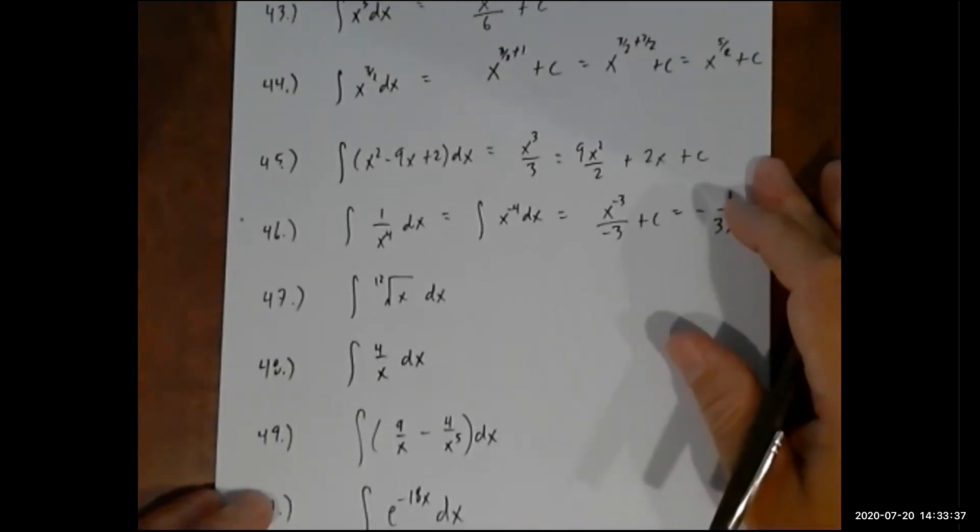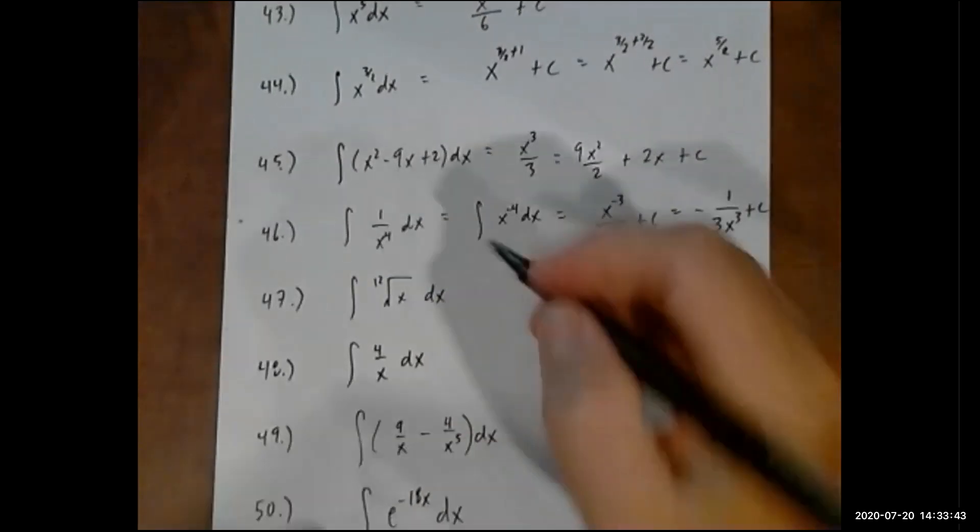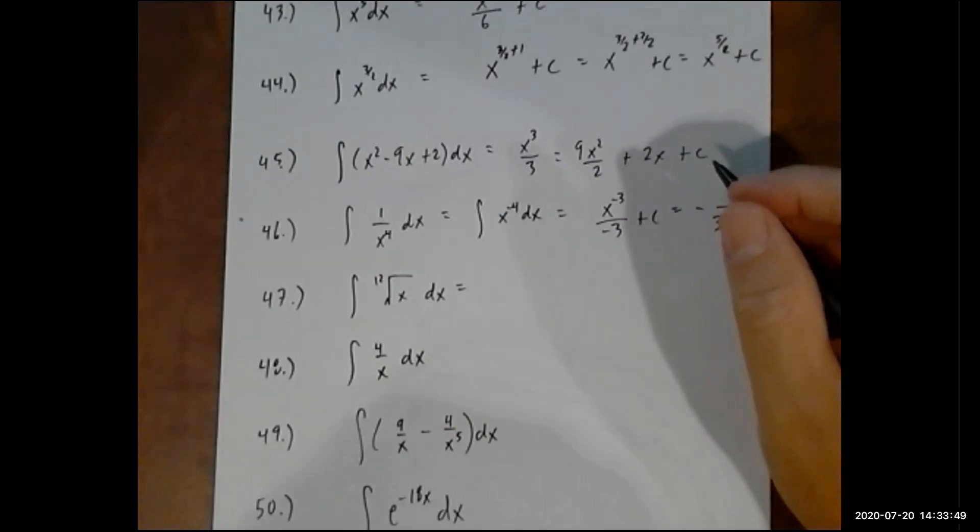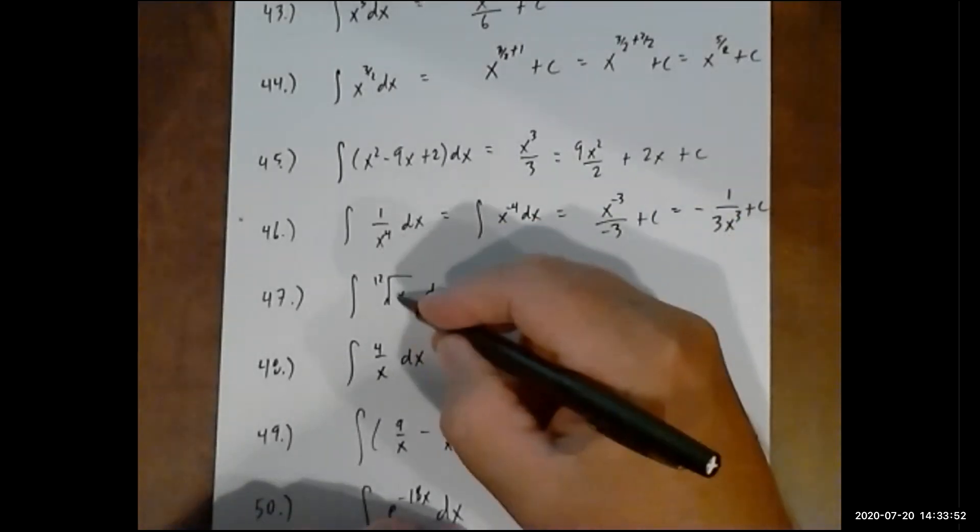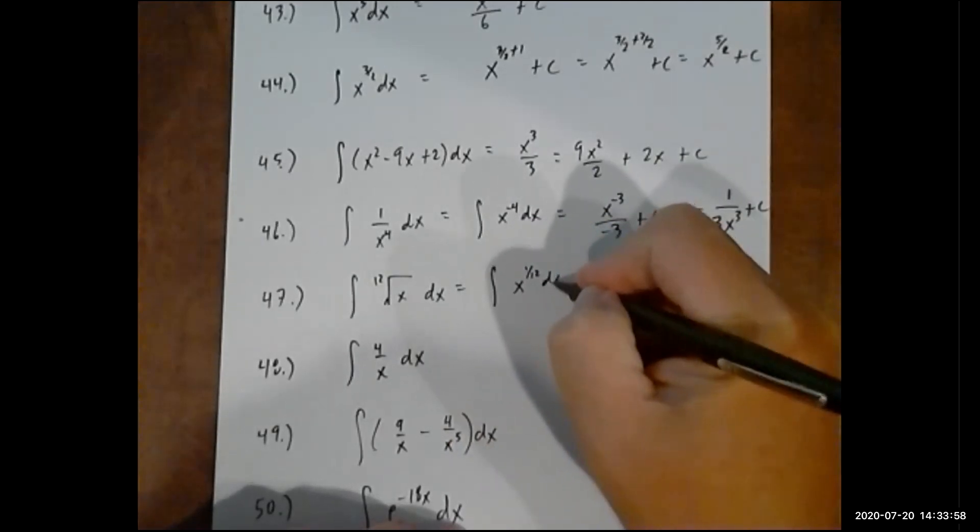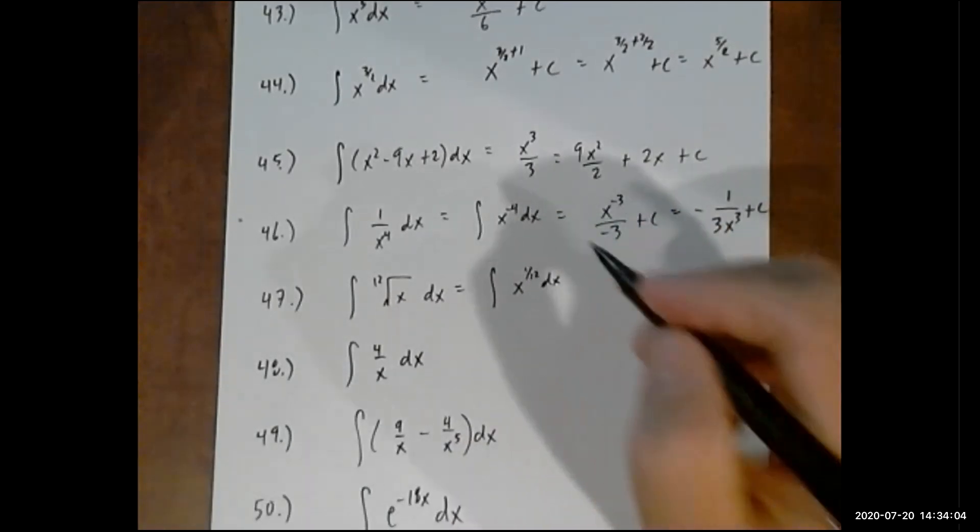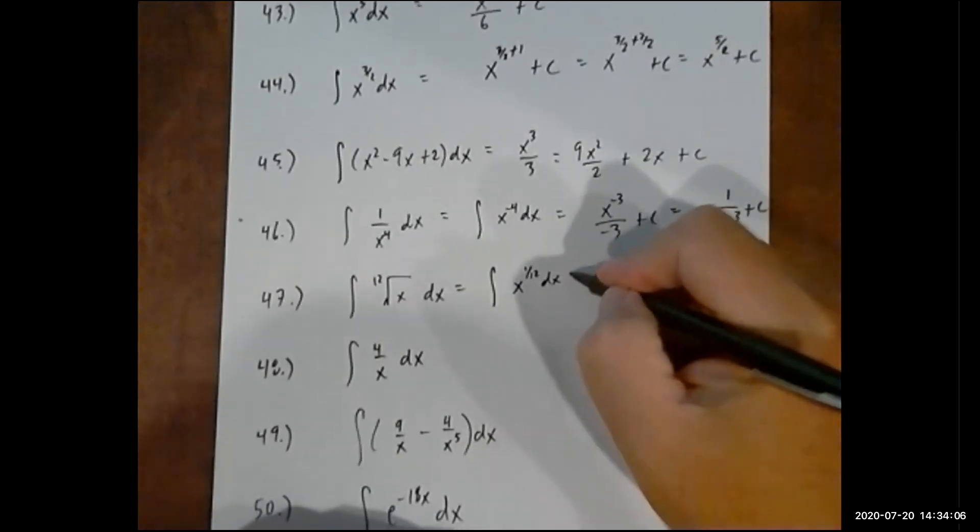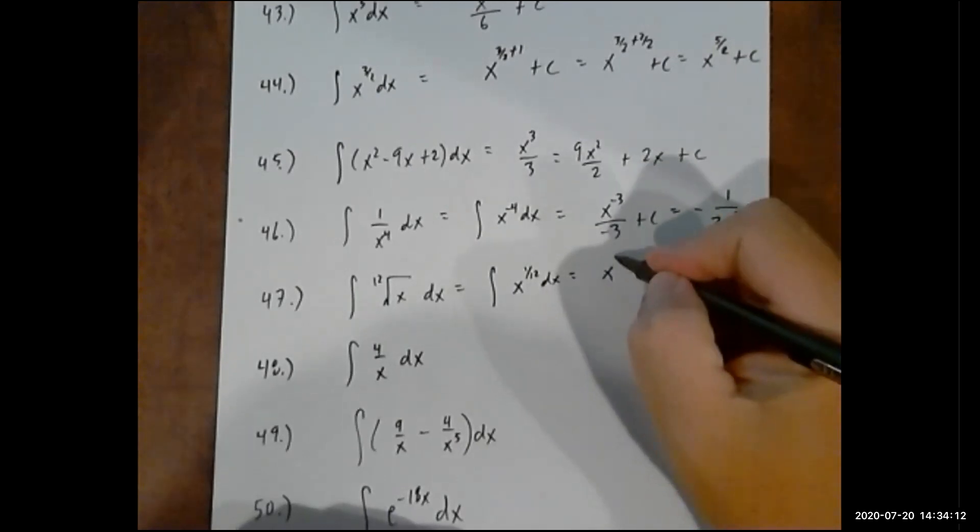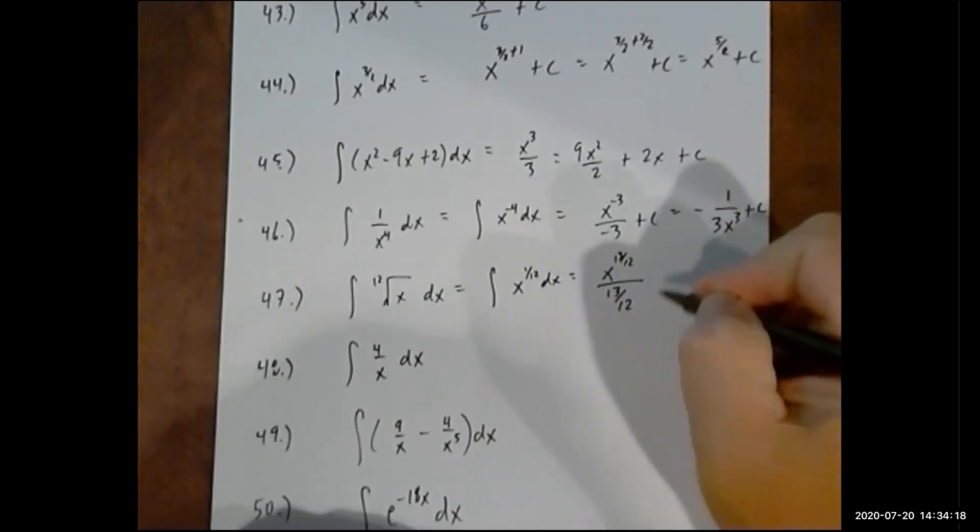Now 47, once again, in its initial form, it's not really in the form where we can apply the power rule. But we all remember how to convert radical to a rational exponent. So this is the 12th root of x. 12th root of x is the same as x to the 1/12th. So now we can take the integral. If we add 1 to 1/12th, that's adding like 12 over 12. So it's x to the 13/12th over 13/12th.